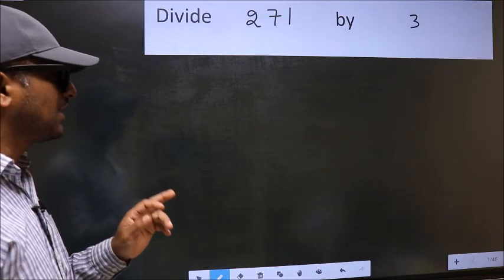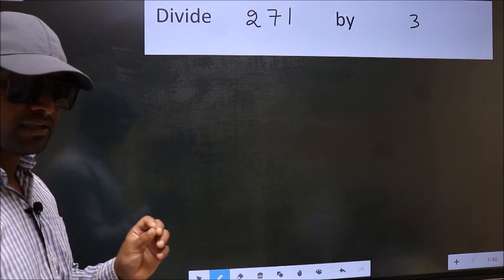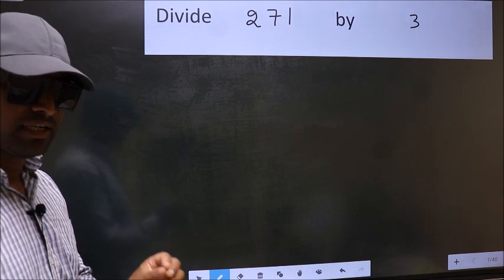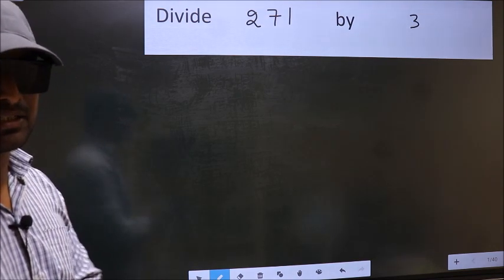Divide 271 by 3. While doing this division, many make a mistake. What is the mistake that they make? I will let you know. But before that, we should frame it in this way.